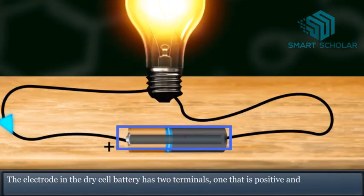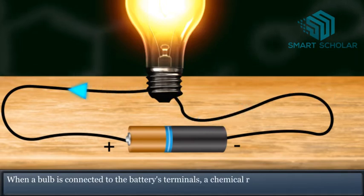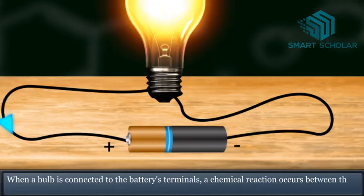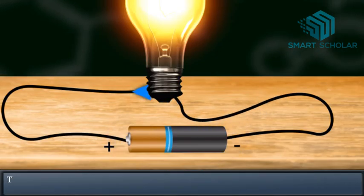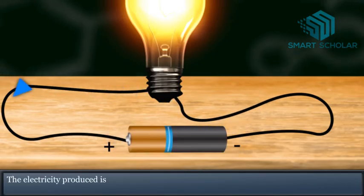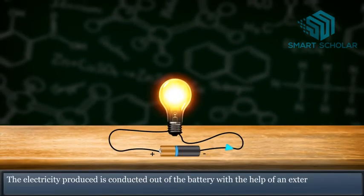The electrode in the dry cell battery has two terminals, one that is positive and one that is negative. When a bulb is connected to the battery's terminals, a chemical reaction occurs between the electrode and the paste that produces roughly 1.5 volts of electricity.